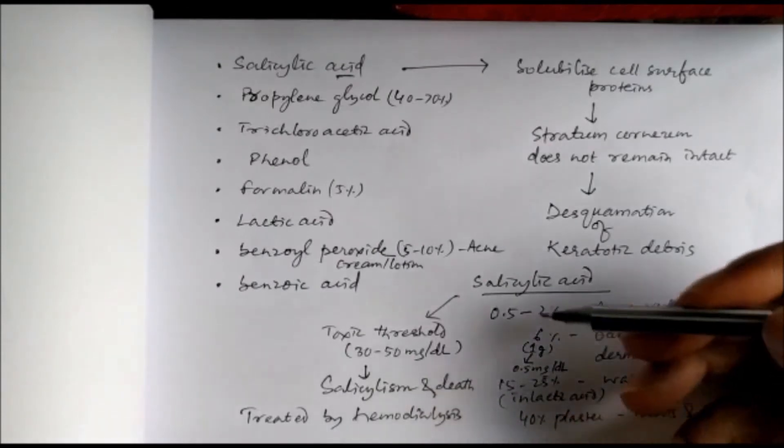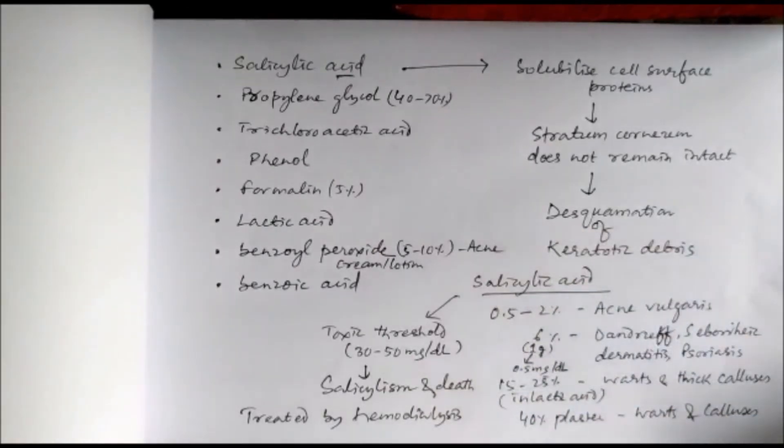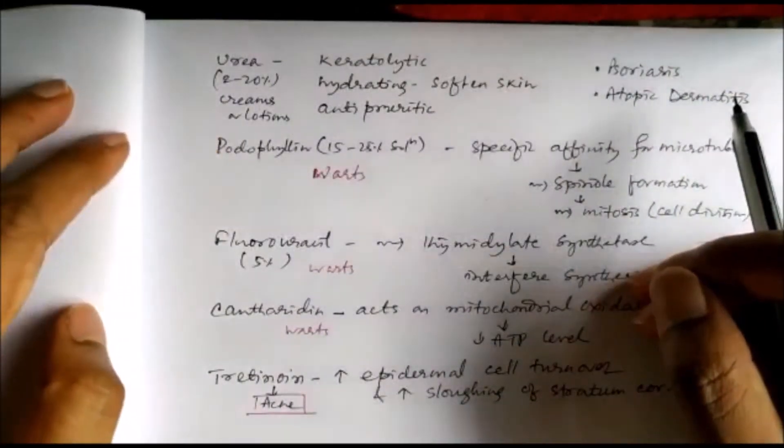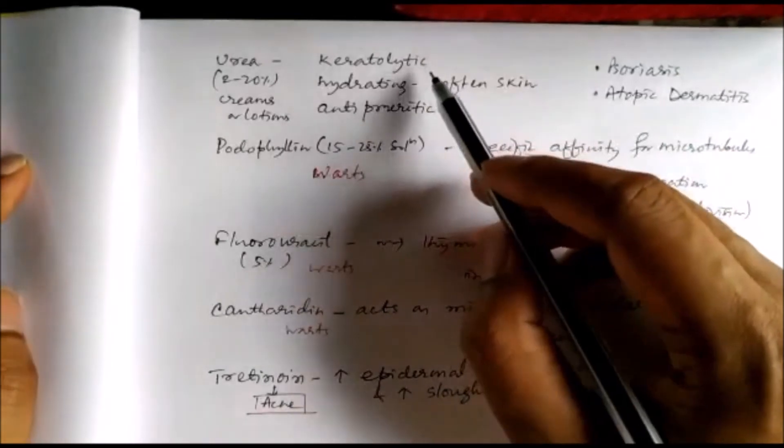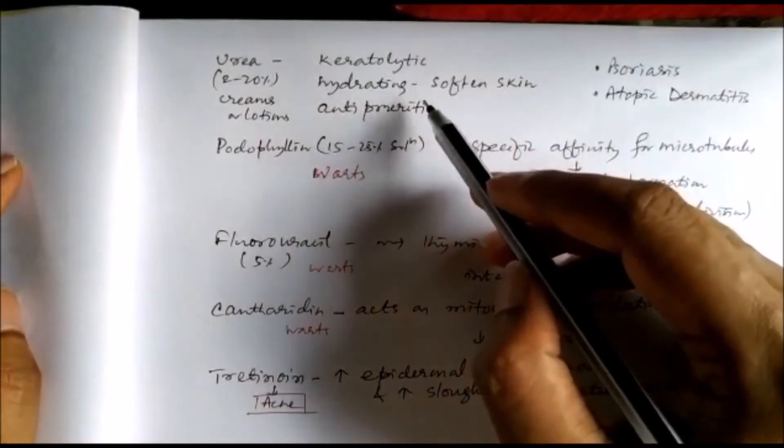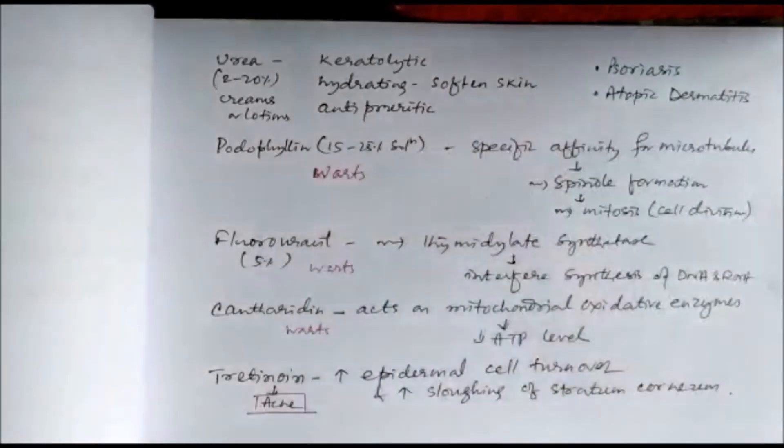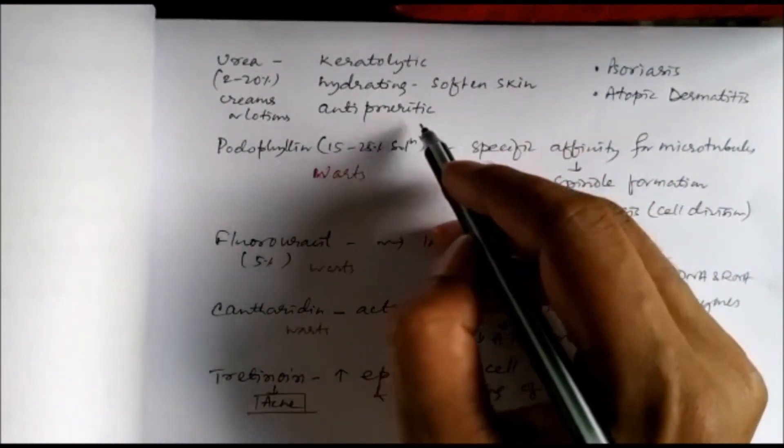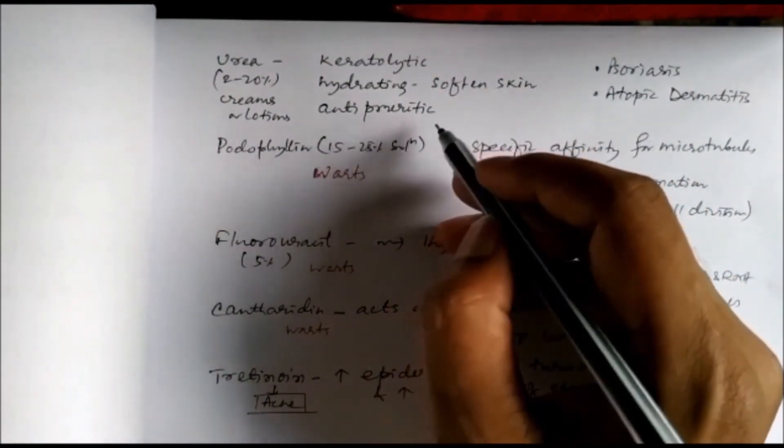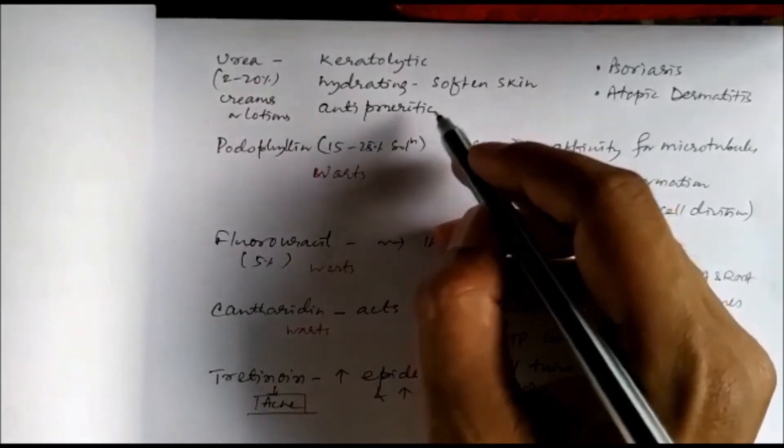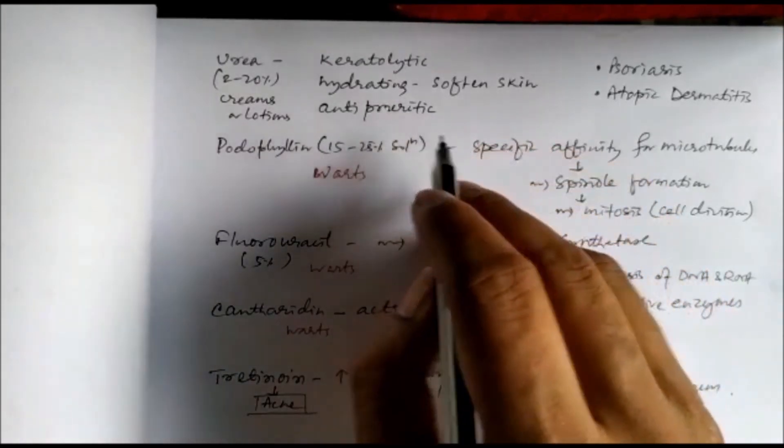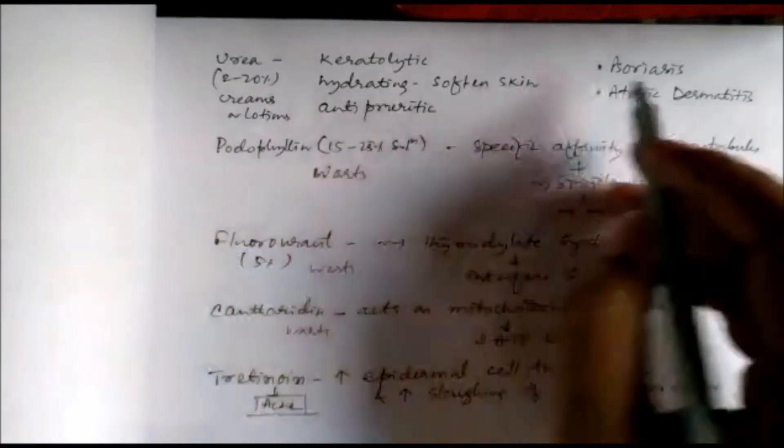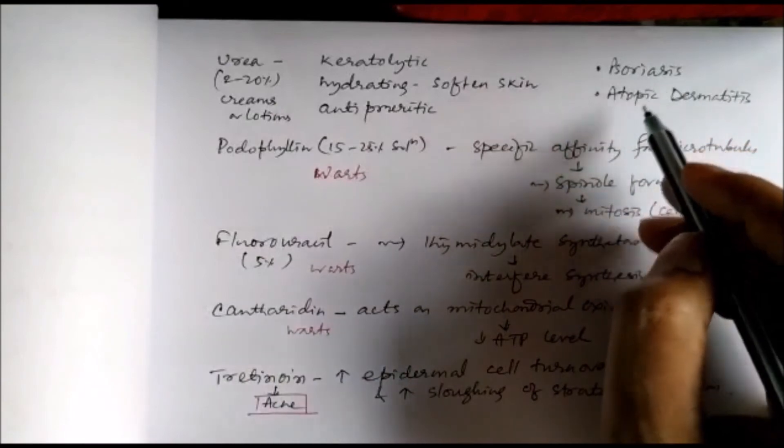In addition to these drugs, there is urea which in addition to its keratolytic action also possesses hydrating property and softens the skin. It also possesses anti-pruritic action, effective against itching. The 2 to 20% of urea creams or lotions are used against psoriasis and atopic dermatitis.